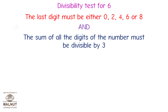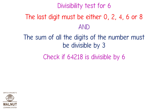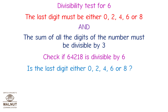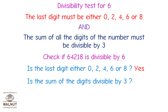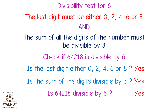Divisibility test for 6. The last digit must be either 0, 2, 4, 6, or 8, and the sum of all the digits of the number must be divisible by 3. Check if 64,218 is divisible by 6. Is the last digit either 0, 2, 4, 6, or 8? Yes! Is the sum of the digits divisible by 3? Yes! Therefore, 64,218 is divisible by 6.